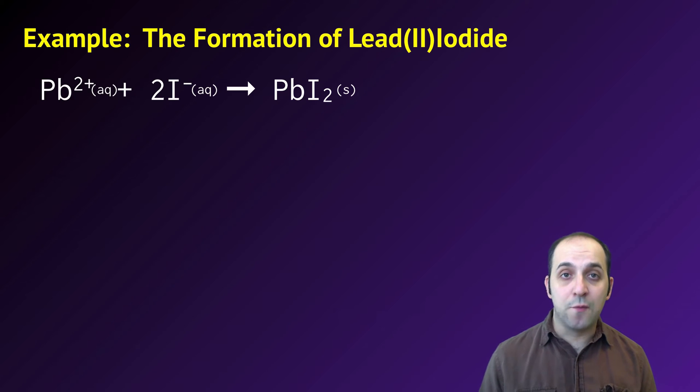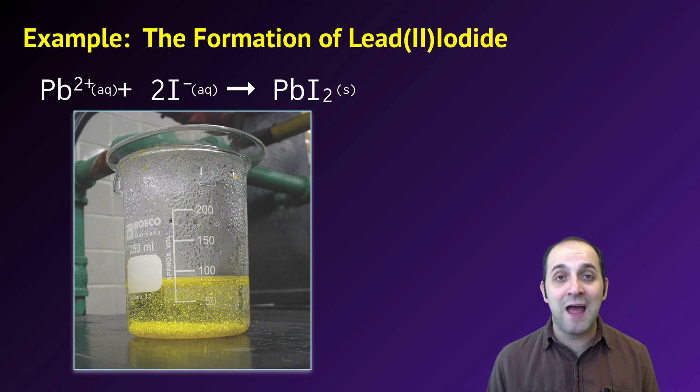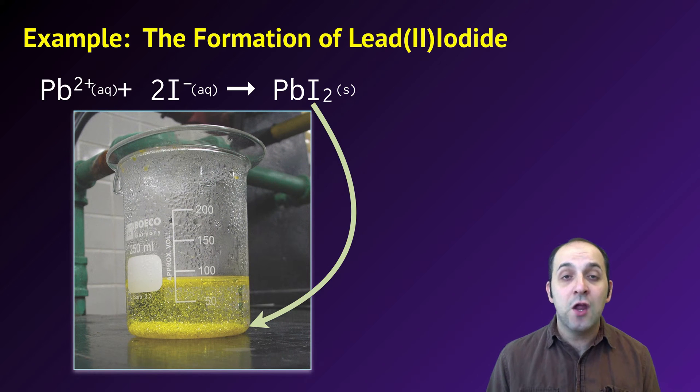Here's an example of a double replacement reaction. In this reaction, we're combining lead two plus ions with iodide ions to produce the insoluble precipitate lead two iodide or PbI₂. This is a famous reaction in chemistry because when you combine lead two plus ions and iodide ions to make lead two iodide, you get these small golden yellow crystals produced, which almost look like a golden rain happening in the beaker.